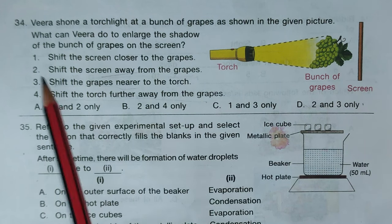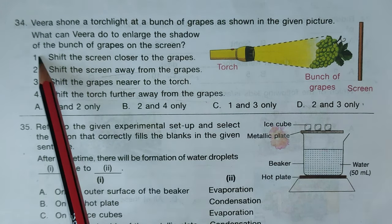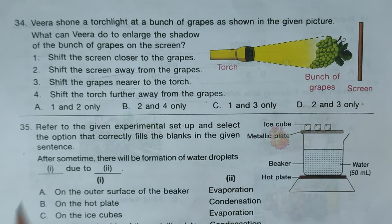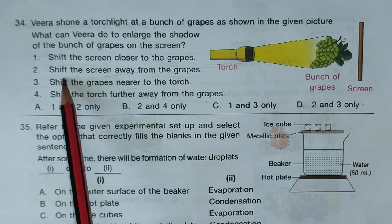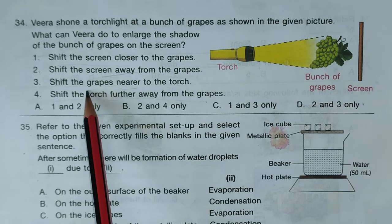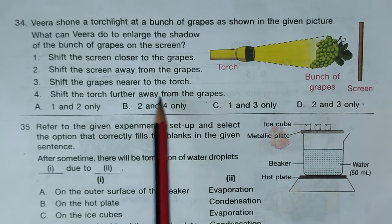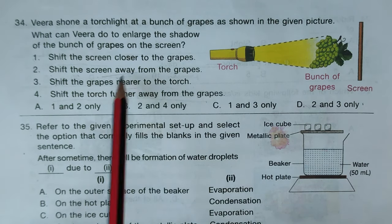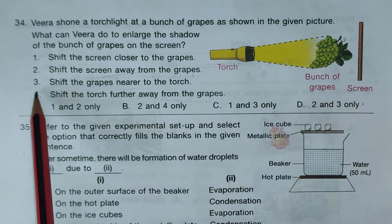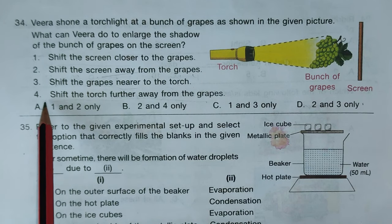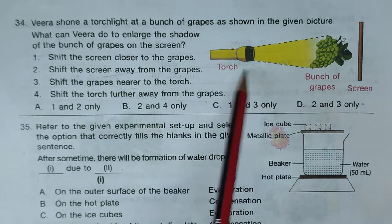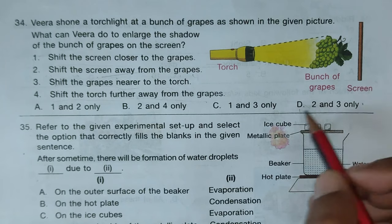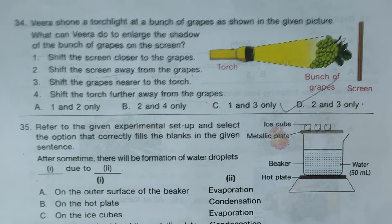Question number thirty-four: Vera shines a torch at a bunch of grapes — what can Vera do to enlarge the shadow on the screen? Option two — shift the screen away from the grapes — will enlarge the shadow. Option three — shift the grapes nearer to the torch — will also enlarge the shadow. Both two and three are correct, and that combination is mentioned in option D. Hence option D is the right answer.